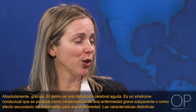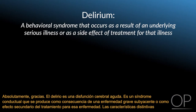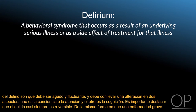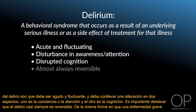Delirium is acute brain dysfunction. It's a behavioral syndrome that occurs as a result of an underlying serious illness or as a side effect of treatment for that illness. The hallmarks of delirium are that it needs to be acute and fluctuating and involve a disturbance in two things: awareness or attention, and cognition. Importantly, delirium is almost always reversible.